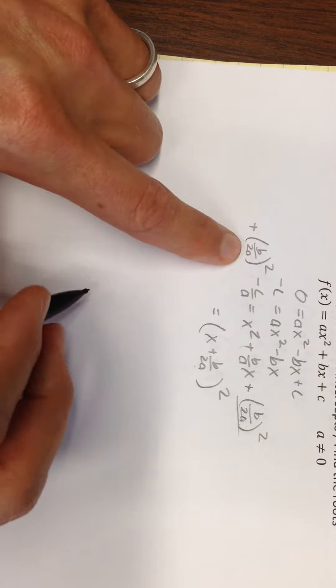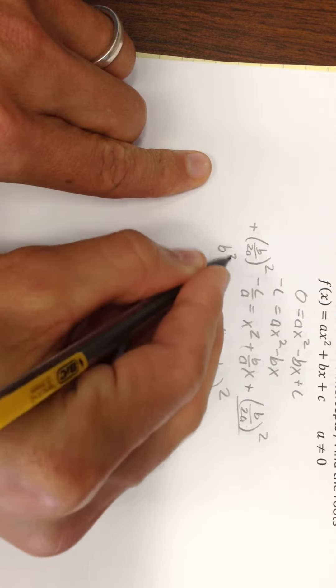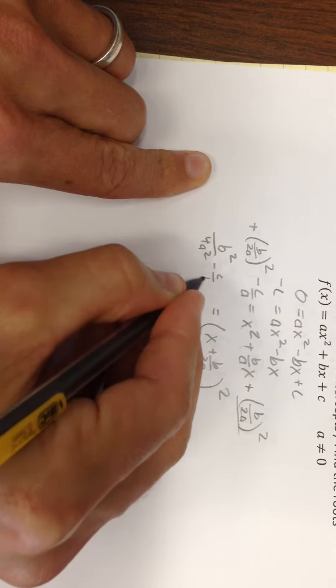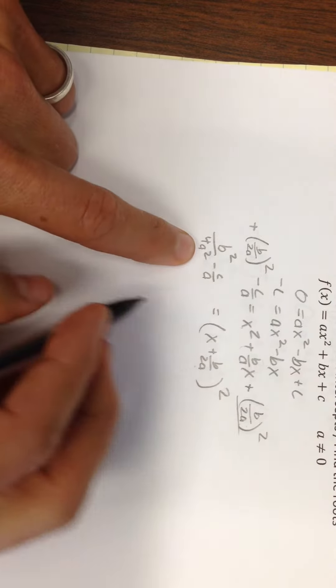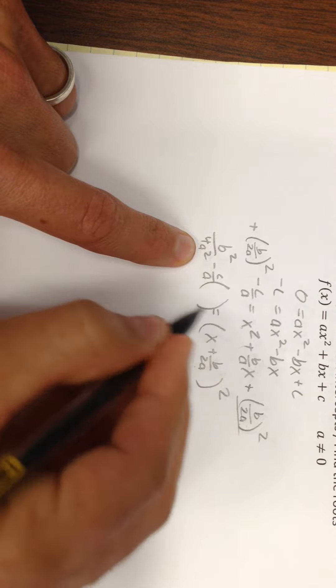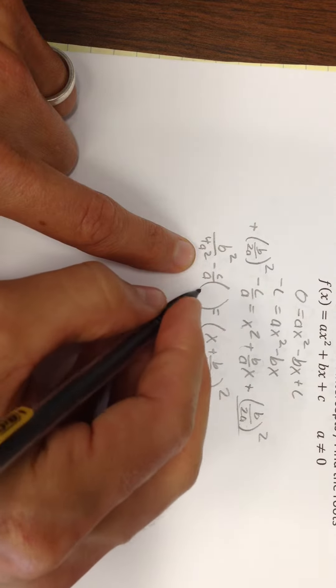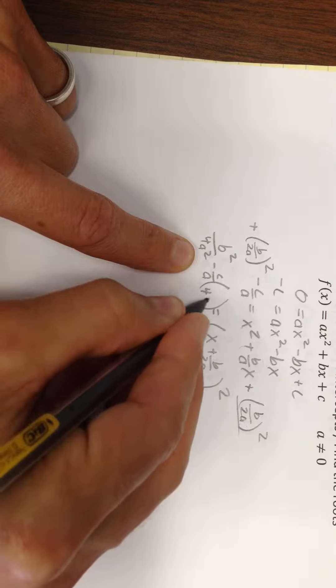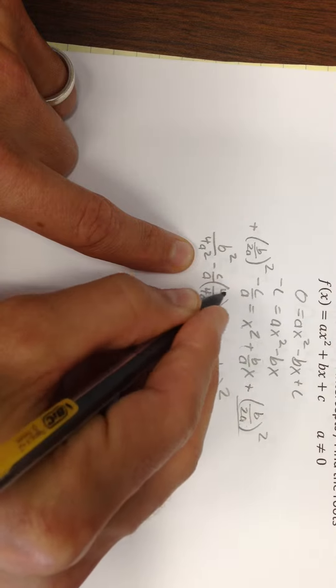How do I combine these two terms? Well this right here is b²/4a² - c/a. So to get a 4a² in the denominator I suppose I would need a 4a/4a.